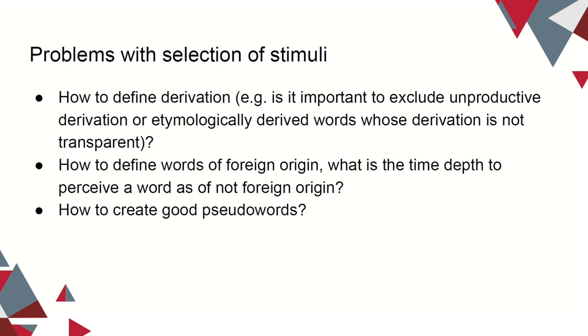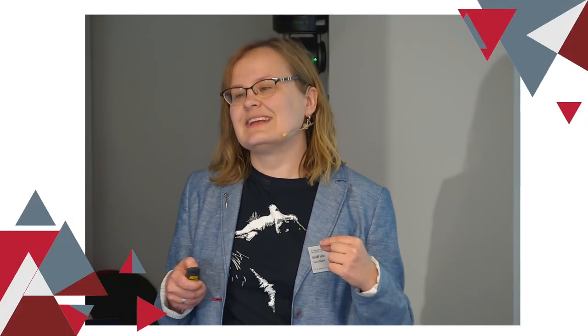There were many issues and aspects to think about. First: what even counts as a derivation if you want to exclude them? In Estonian it's not a simple task — in some cases it's a clear derivation, but in others the boundary between derived and non-derived is fuzzy. Also: what actually counts as a foreign word, since there are so many foreign influences in Estonian? This is something we discussed a lot in our group. And finally: what makes good pseudowords? How different should they be from actual words? In some sense it's good to make the test really difficult with very similar words, but then it might become impossible for non-native speakers.